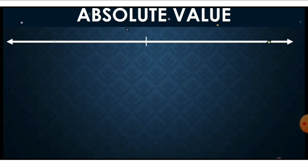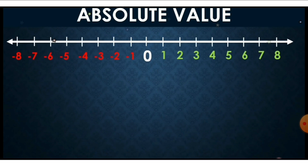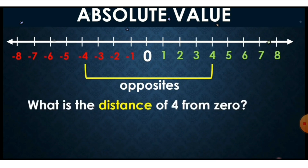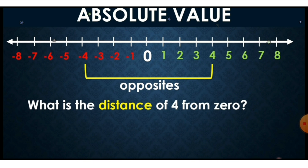Let's try to use the number line. Zero is the starting point at the middle, and we have the opposite numbers — the negative and the positive numbers. The question here is: what is the distance of four from zero? Positive four is to the right. From zero, we count how many units to positive four: one, two, three, four. So the distance is four.